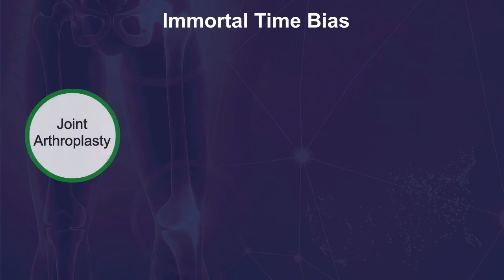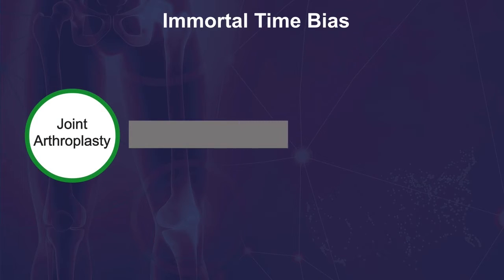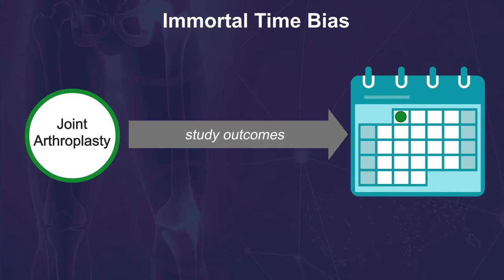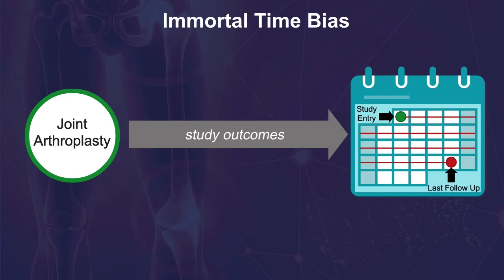In joint arthroplasty research, many endpoints are measured as time-to-event outcomes. Patients are followed after surgery, and the outcomes occur over time during the follow-up period. These kinds of outcomes are analyzed using survivorship methodology such as Kaplan-Meier and Cox regression methods.